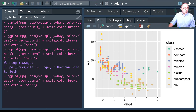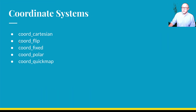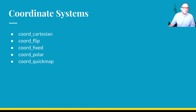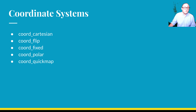Next let's talk about the coordinate system, which is the next term in the grammar of graphics. Coordinate systems are specified with functions using the coord method, adding an additional layer. The available coordinate systems include: Cartesian (specifying x and y values, allowing zoom), flip (Cartesian with x and y swapped), fixed (fixed aspect ratio), polar coordinates, and quickmap (approximating a good aspect ratio for maps).